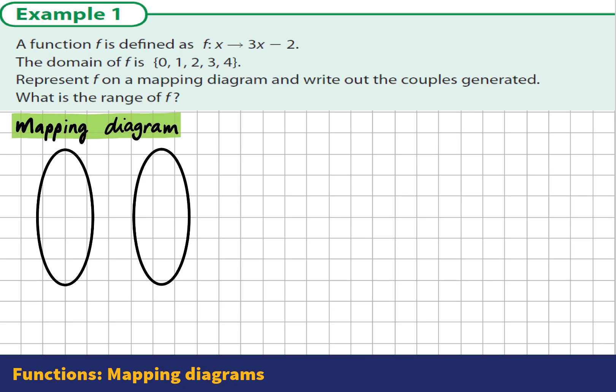We call the first oval here our domain, our input values. Our input values in this question are 0, 1, 2, 3 and 4. There's exactly only these five input values in our domain.